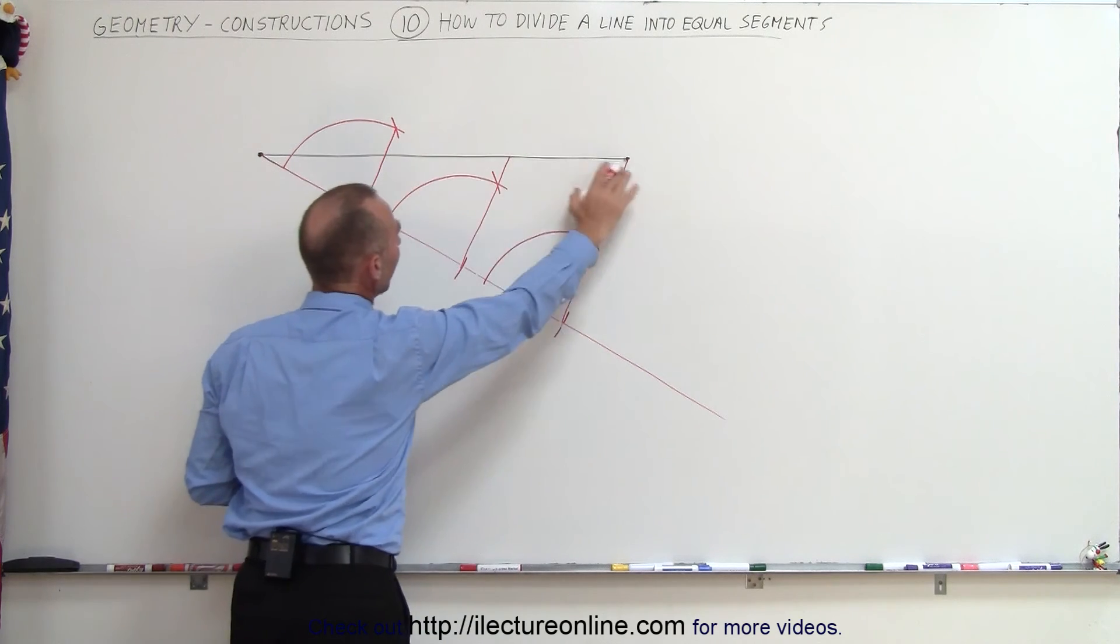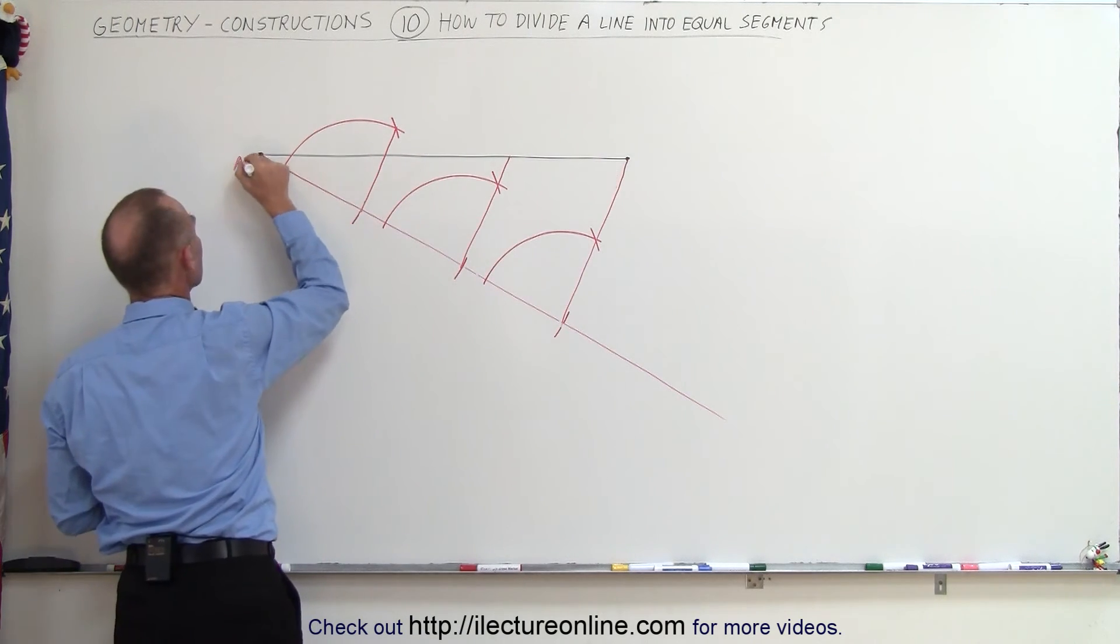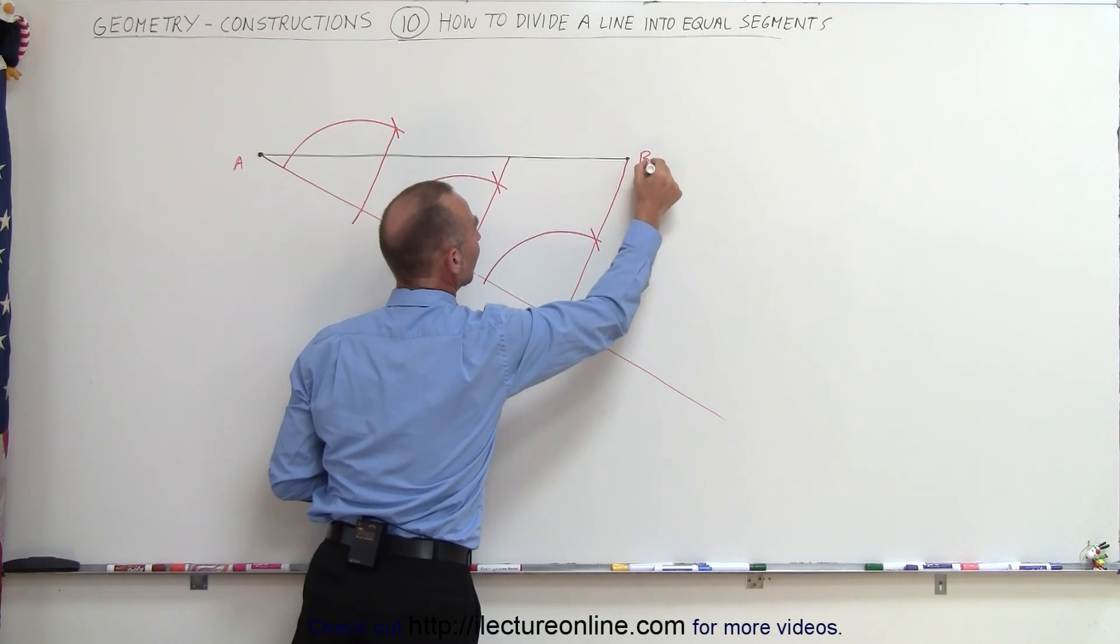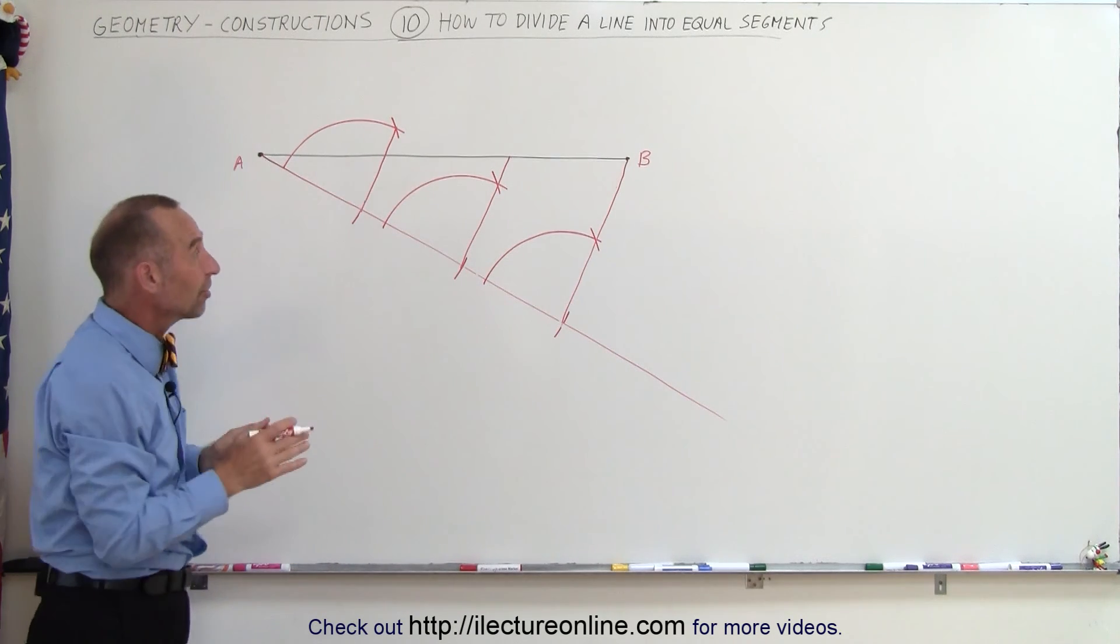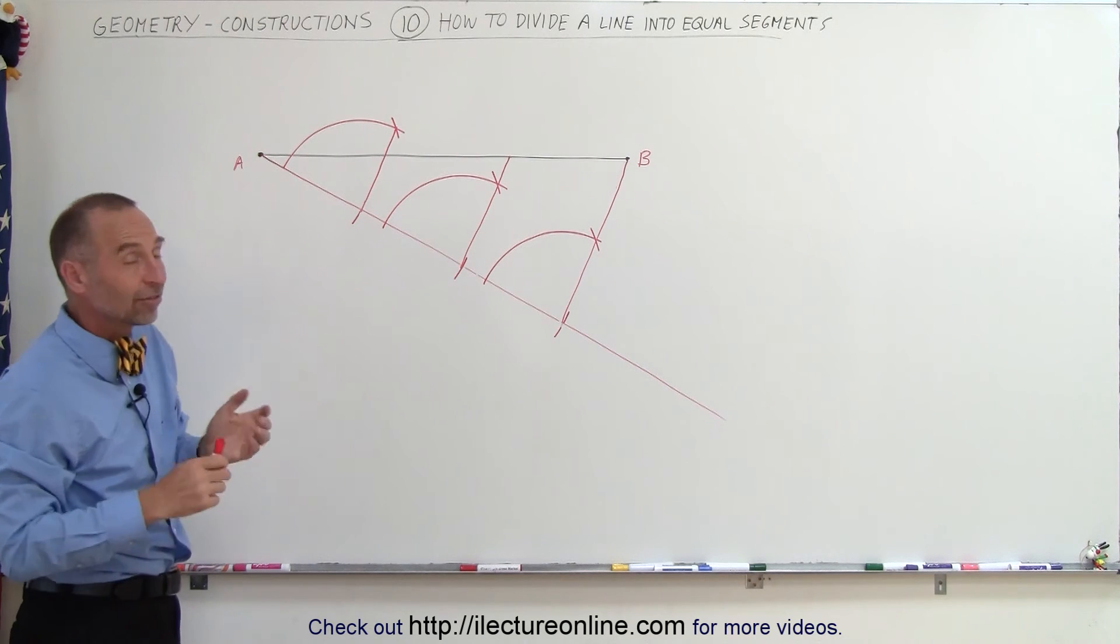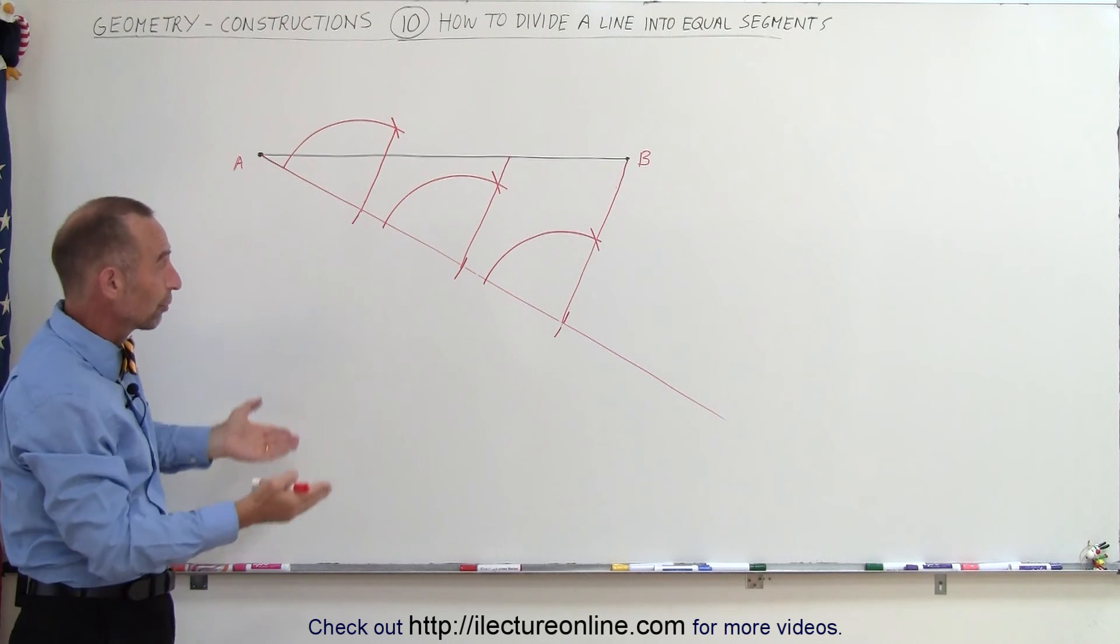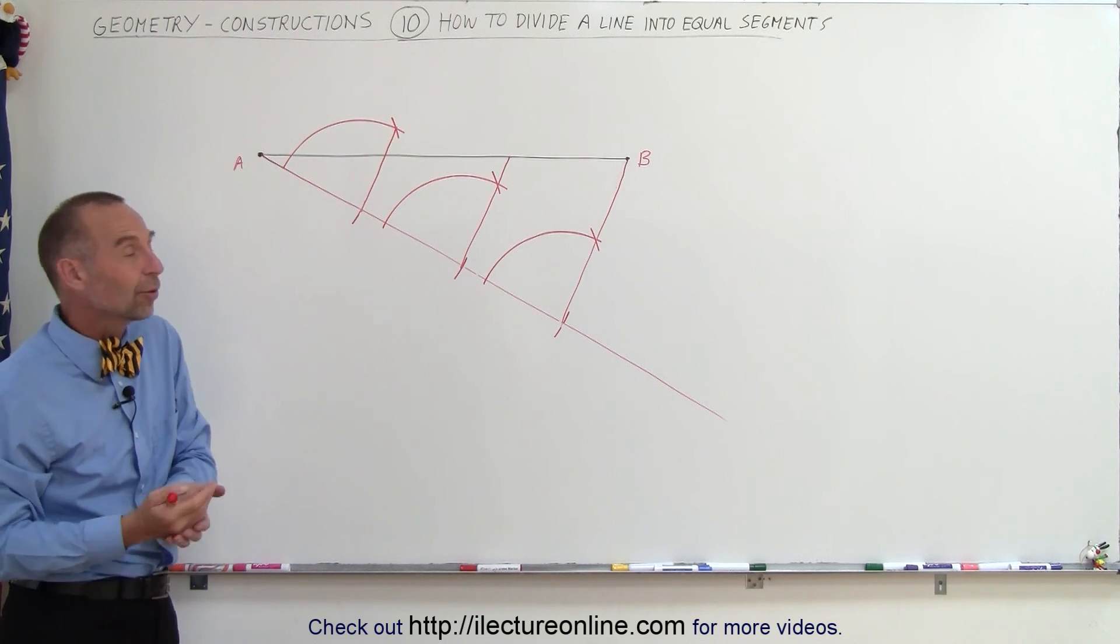That's how I go ahead and take a line from A to B and divide it into exactly equal numbers or into a number segments of exactly equal length. In this case it was three segments but you can do it for four segments, five segments, two segments, whatever you like.